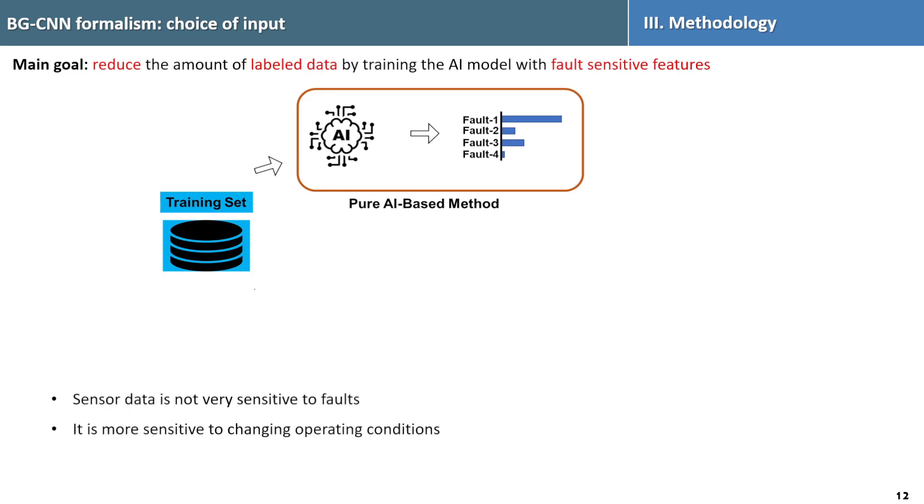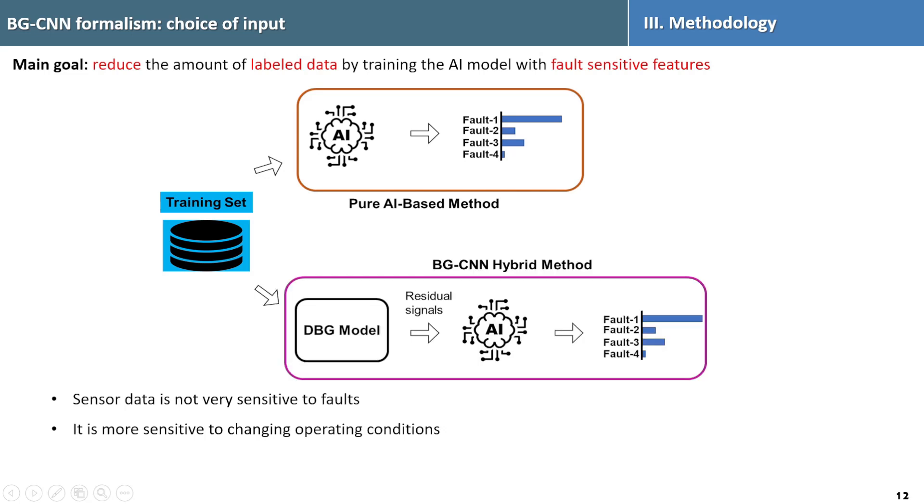The main problem with sensor data is it is not very sensitive to faults and it is more sensitive to changing operating conditions. Hence, we propose to use residual signals instead which are generated from the diagnostic Bond Graph model as input to train the AI model because they are more sensitive to faults in the system and not much sensitive to change in operating condition.